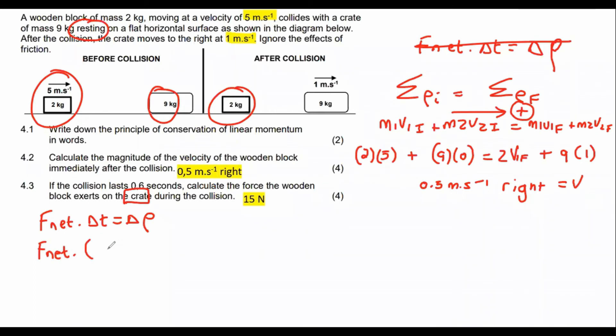So we can say F net. And then the time is 0.6 equals to now change in momentum can be expanded into MVF minus MVI. Let's choose a direction as positive as well. So we're going to go F net times 0.6 equals now the mass of the crate.